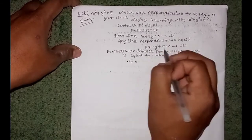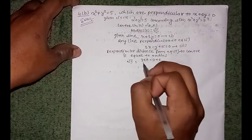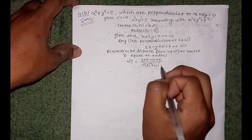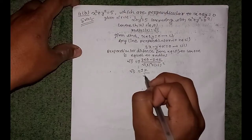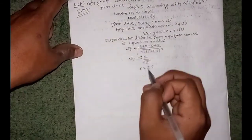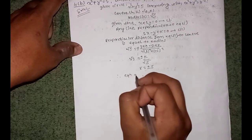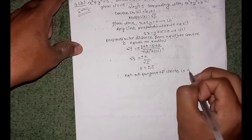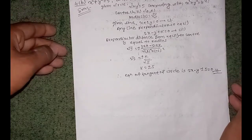So √5 = |2(0) - (0) + k| / √(2² + 1²) = |k| / √5. Therefore k = ±5. The equation of the tangent of the circle is 2x - y ± 5 = 0. This is the answer for question 4, number c.